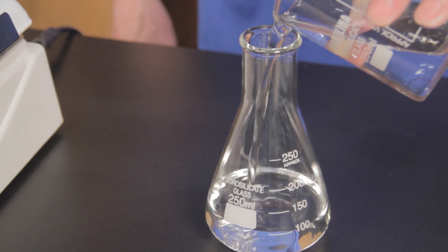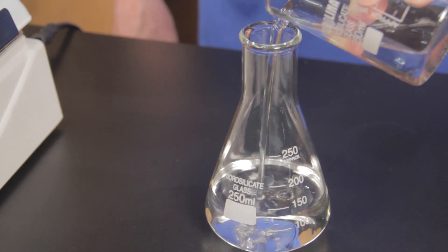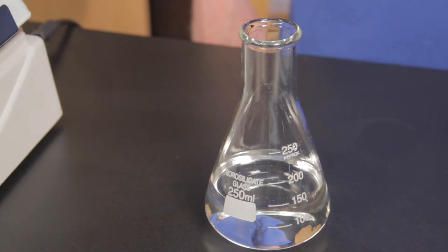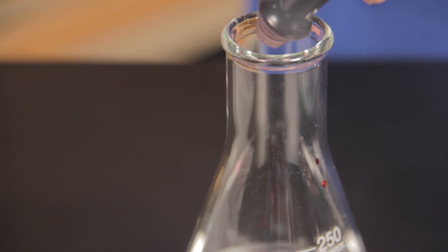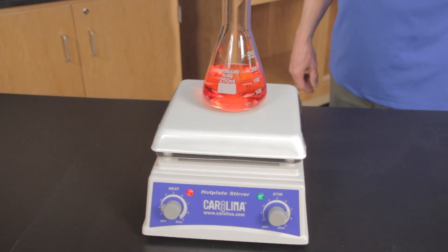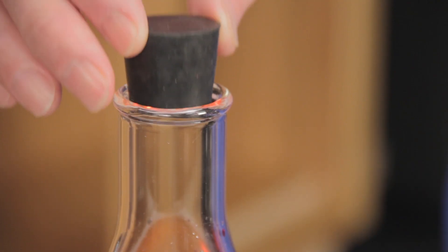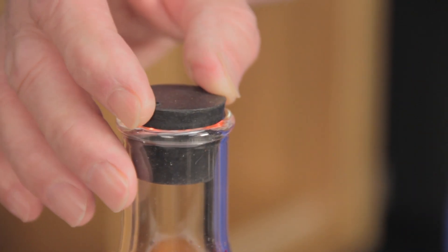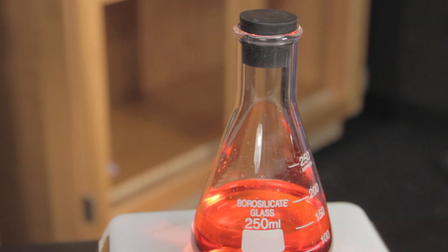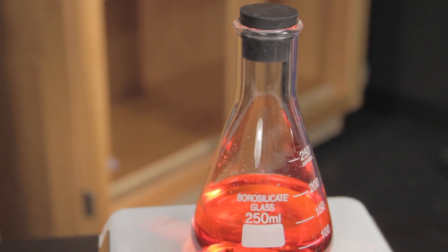The design of Erlenmeyer flasks creates a low center of gravity, making them the perfect vessels for mixing, stirring, holding, and heating solutions. Due to its large volume and small surface area, this type of flask minimizes evaporative loss and can be temporarily closed with the appropriately sized cork or rubber stopper.